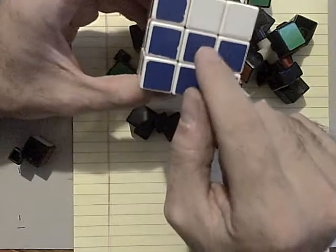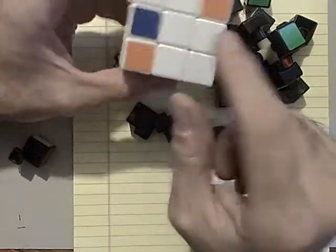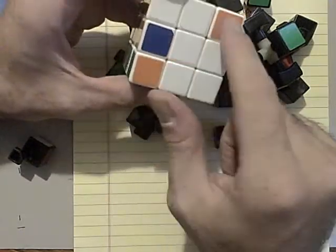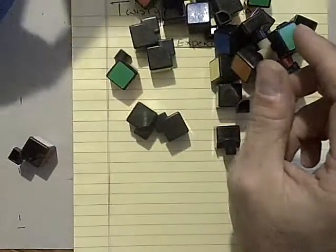So the center determines the color of each side. So on this cube, right here, this is the blue side, and it's always the blue side. And this is always the white side, even if these pieces aren't. The center tells you the color of the side.